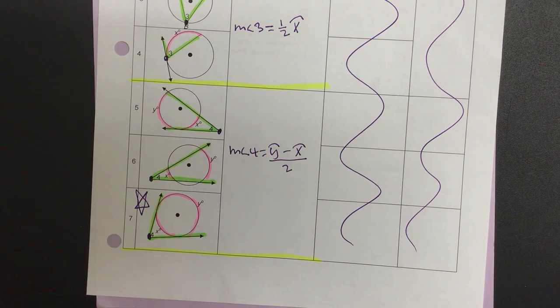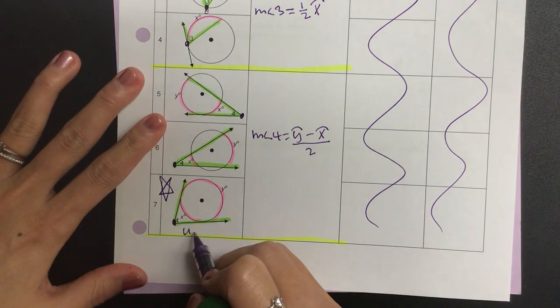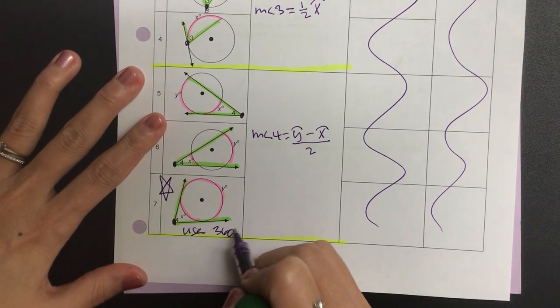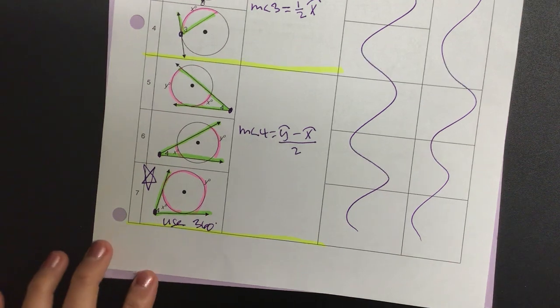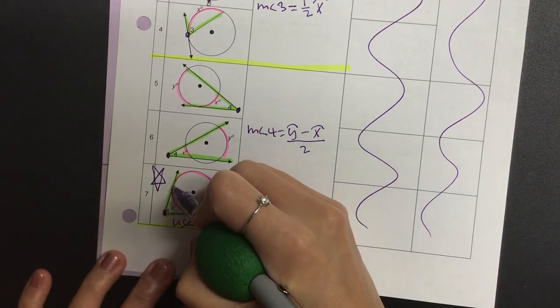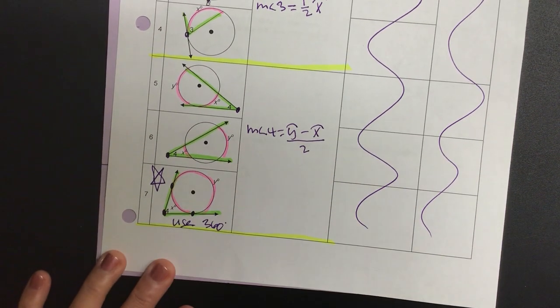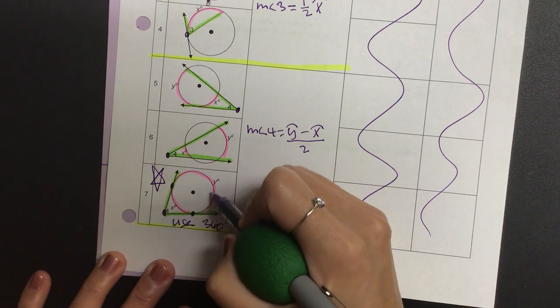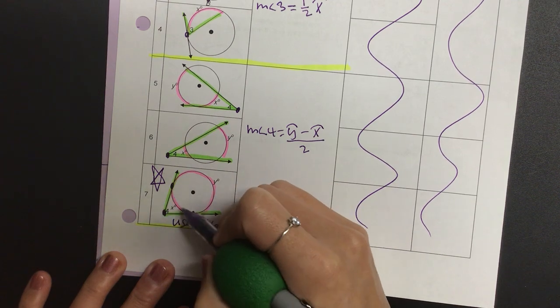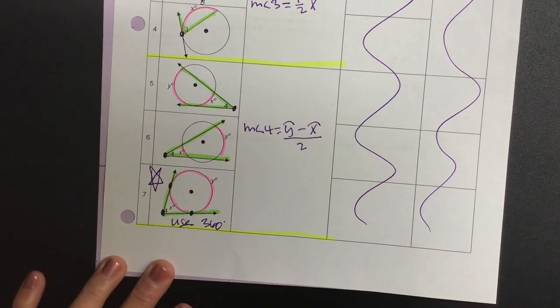One thing that I want you to write on number seven: on the bottom, you have to use 360 degrees to find one of the angles as long as the other one's given, because it's hitting at one point. Meaning whatever angle measurement the y that I gave you, to find the x you take 360 minus that, or vice versa. Are we good with that piece?